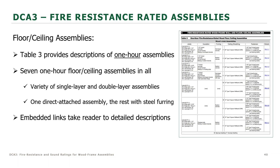Now let's talk about the floor ceiling assemblies in DCA3. Table 3 provides a summary of the one-hour assemblies — a total of seven one-hour floor ceiling assemblies. This includes a variety of single-layer and double-layer assemblies, most of which have steel furring: the ceiling membrane is attached to either a steel hat channel or a steel resilient channel, which in turn is attached to the bottom flanges of the framing members, the joists. Just as with Tables 1 and 2, Table 3 includes links to more detailed descriptions of each assembly.